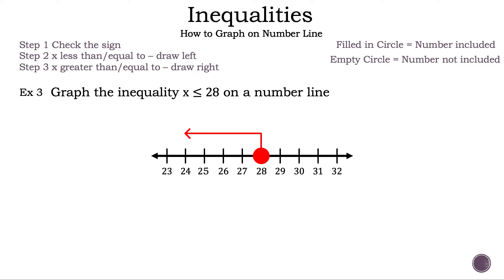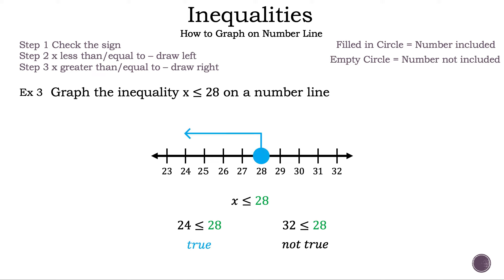Now let's check. Let's write down x less than or equal to 28. We need to pick a number to the left of 28 and a number to the right of 28. First, let's use the number 24. Is 24 less than or equal to 28? That is true. Next, let's use the number 32. Is 32 less than or equal to 28? That is not true. So the arrow is pointed in the correct direction. That is example 3.